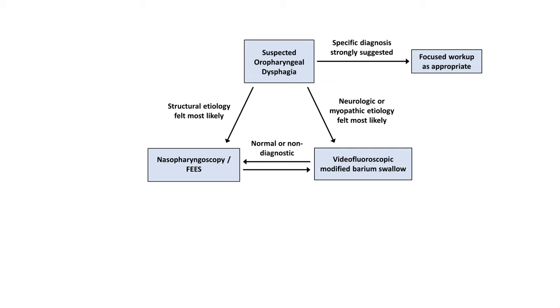If the nasopharyngoscopy shows a visible abnormality, biopsy will usually provide the diagnosis. If the videofluoroscopic swallow study suggests pathology of the upper esophageal sphincter, this is usually further evaluated with manometry, which directly measures the sphincter's pressure.